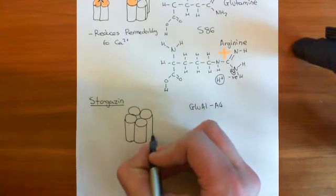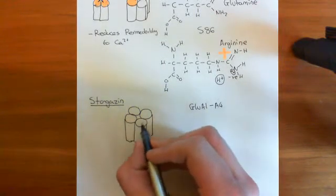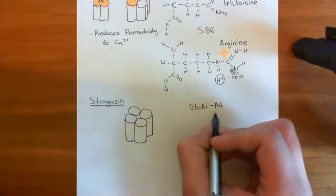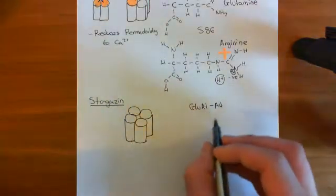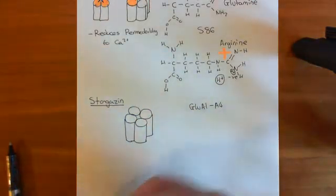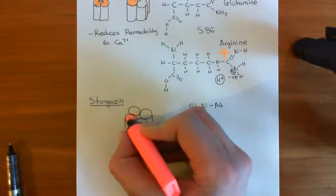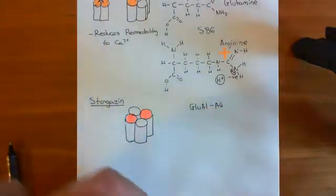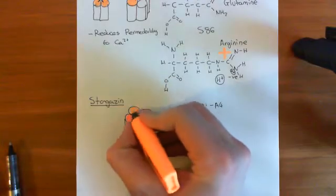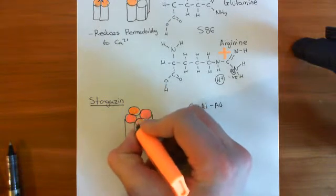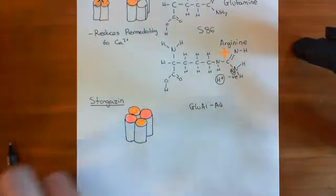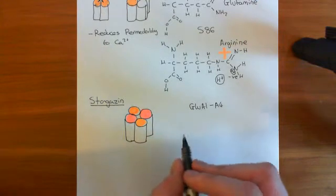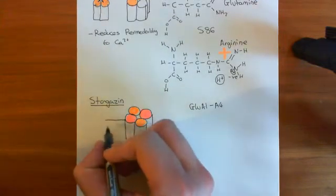We also know that when you form these tetramers, you can form homotetramers where you use a single subunit in all four sockets, or you can form heterotetramers where you pick two subunits, make two of each protein, and put them in the diagonally opposite positions to make a heterotetramer. Now what we're going to discuss is an auxiliary subunit to this whole channel, known as stargazin.